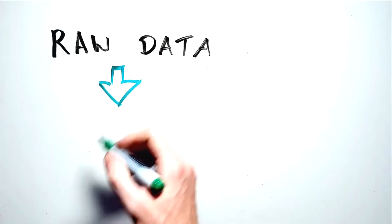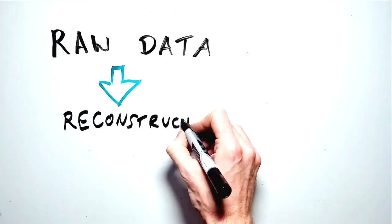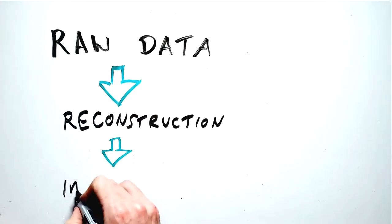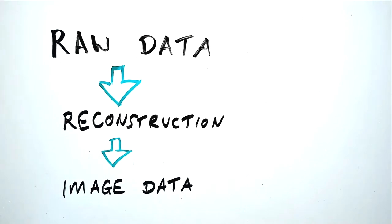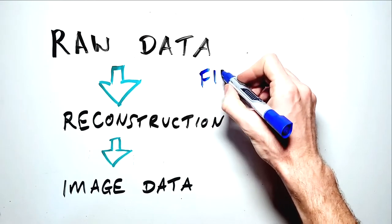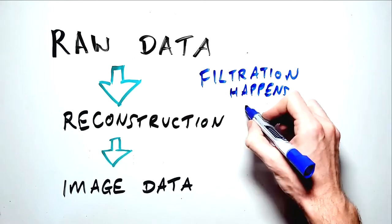Data collected by the detector in its most basic form is referred to as raw data. This data is then reconstructed into image data. Certain manipulations such as filtering the data must be applied to the raw data as part of this initial reconstruction process.